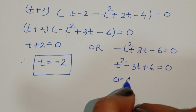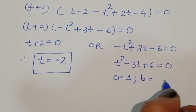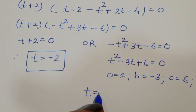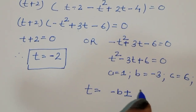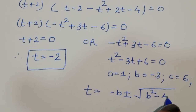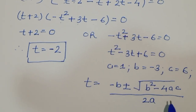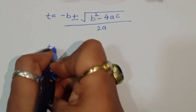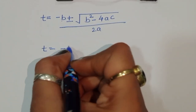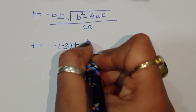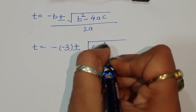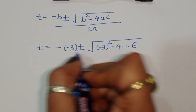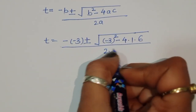We use the quadratic formula: t equals minus b plus or minus square root of b squared minus 4ac, all divided by 2a. Substituting the values: t equals minus(minus 3) plus or minus square root of (minus 3) squared minus 4 times 1 times 6, divided by 2 times 1.